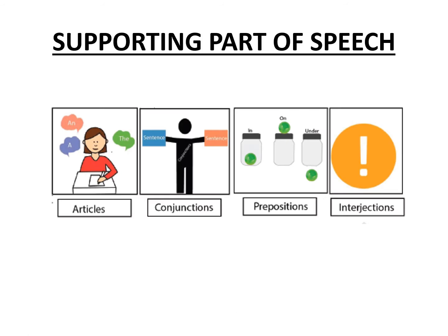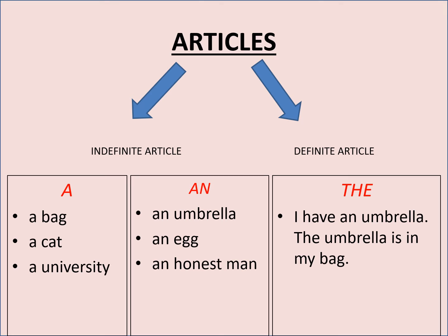Now let us look into some of the supporting parts of speech. The first one is articles. Articles are basically letters or words that we use before nouns or noun equivalents. They are of two types: the first one is an indefinite article and the second one is a definite article. Indefinite articles include 'a' and 'an', while the definite article is 'the'. 'A' is used before words which have a consonant sound. For example, a bag, a cat, a university — there's a 'y' sound in university, so we use 'a'.